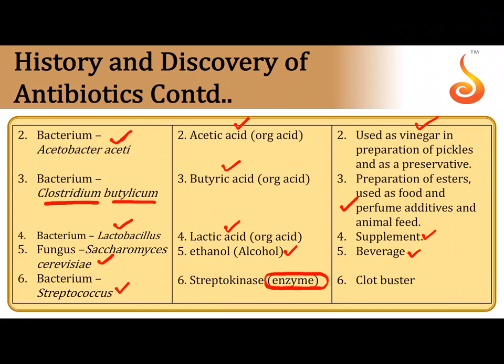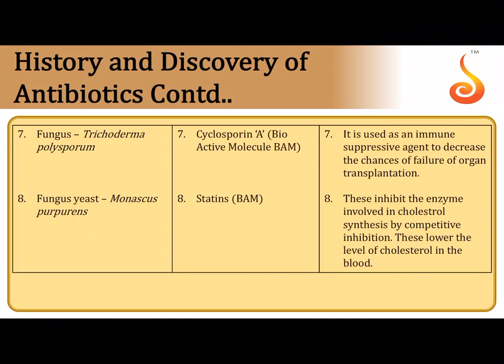The bacterium Streptococcus is a source of an enzyme called streptokinase, which is used as a clot buster. It is used in atherosclerosis where a clot forms in the coronary artery — this streptokinase enzyme dissolves those clots and helps patients suffering from heart attack or coronary artery diseases.